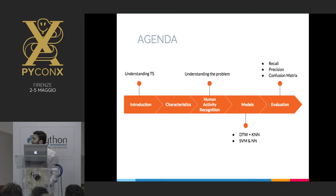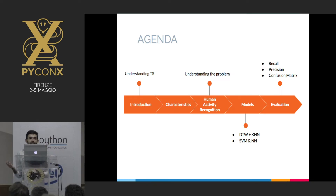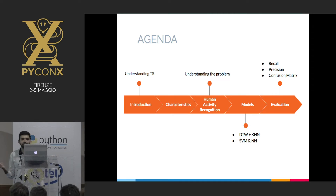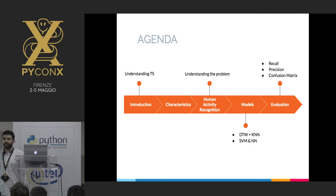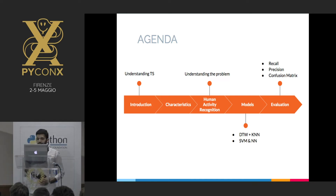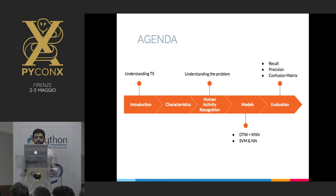Today's agenda is: understanding what time series is, why we use time series analysis, some characteristics of time series — like what is a stationary time series, what is non-stationary time series — understanding the problem of human activity recognition. We'll then apply some models and evaluate using precision, recall, and a confusion matrix.